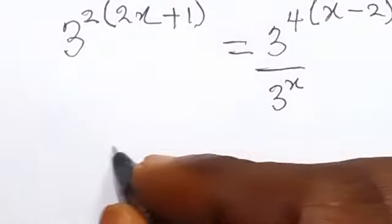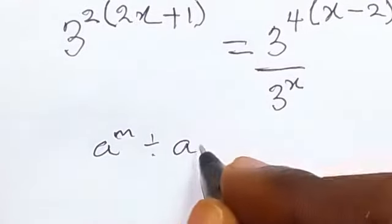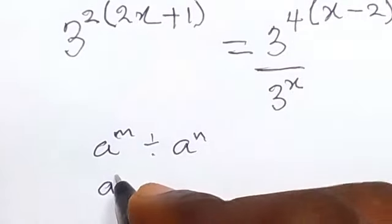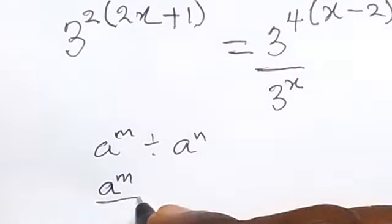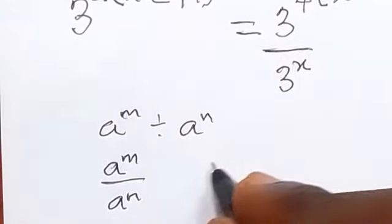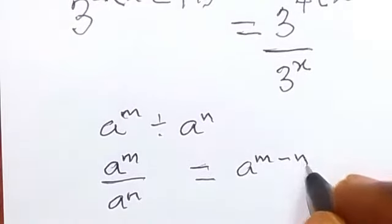For instance, we are given a raised to power m divided by a raised to power n. So this one will become a raised to power m minus n.